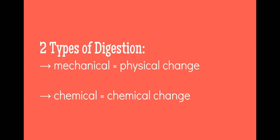Mechanical digestion is where a physical change happens, and chemical digestion is where a chemical change happens, in the digestive system.